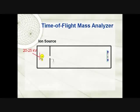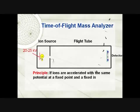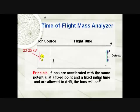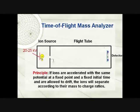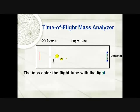The time of flight mass analyzer consists of three components: ion source, flight tube, and an ion detector. In the time of flight mass analyzer, vacuum is created and a potential of 20 to 25 kilovolts is applied on the sample plate containing the sample or matrix. As a result, the sample vaporizes and ionizes, with ions traveling the flight path towards the ion detector. The principle is that if ions are accelerated with the same potential at a fixed initial time and are allowed to drift, the ions separate according to their charge-to-mass ratios. The lighter ions travel faster and reach the detector earlier than the heavier ones. This time of flight can be converted to mass.